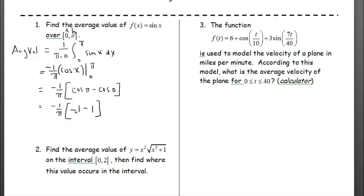This reduces to negative 2. Negative 2 times negative 1 over pi would result in 2 over pi.